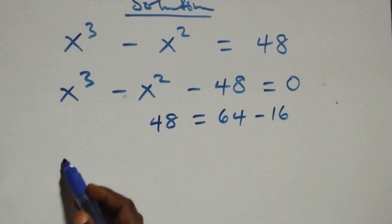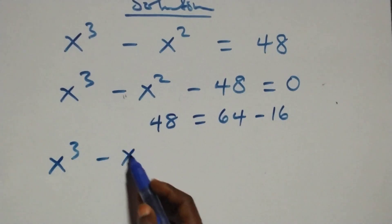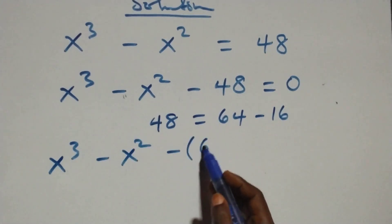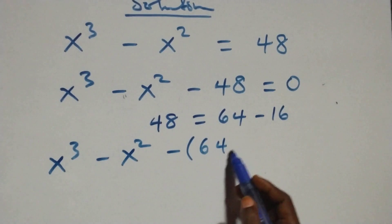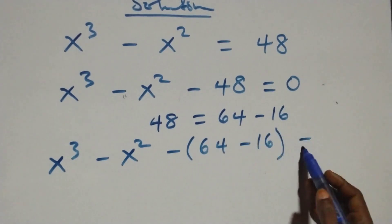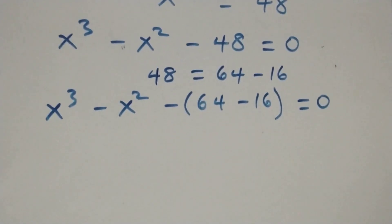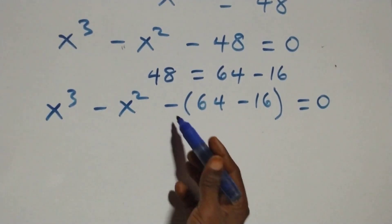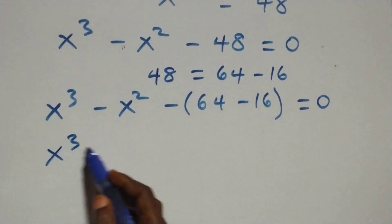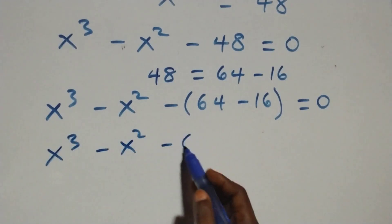So all we have becomes x raised to the power 3 minus x raised to the power 2, then minus into bracket 64 minus 16, close bracket, equals to 0. Opening the bracket, we have x raised to the power 3 minus x raised to the power 2 minus 64 plus 16 equals to 0.